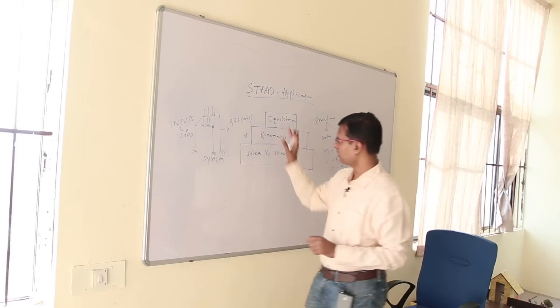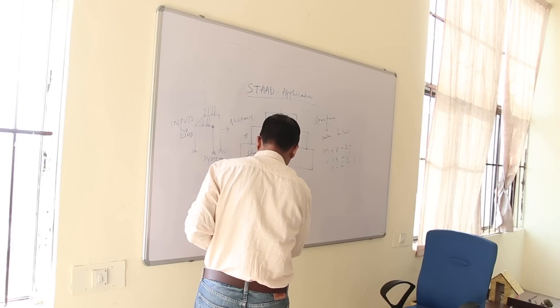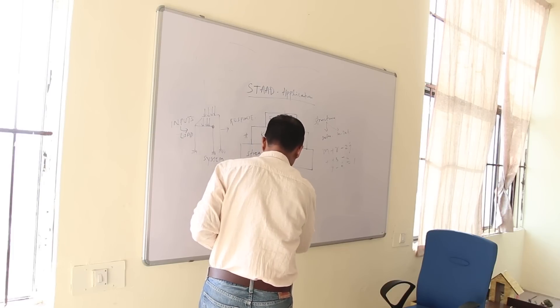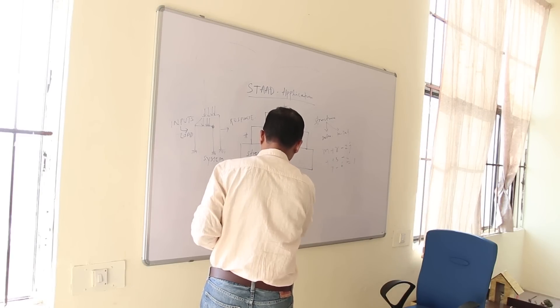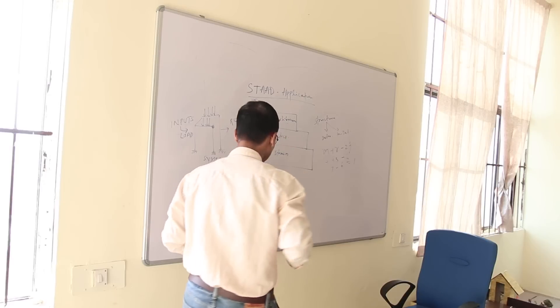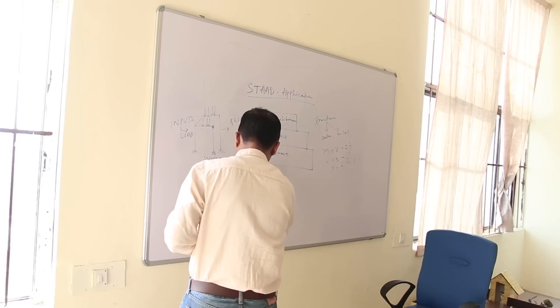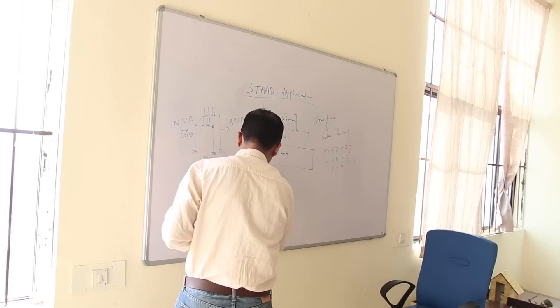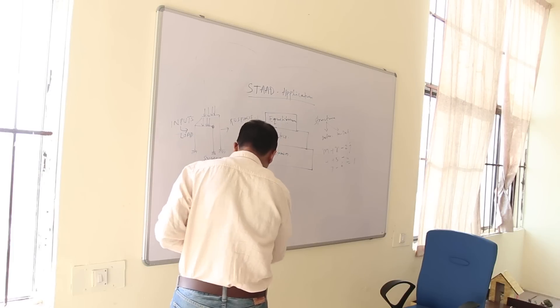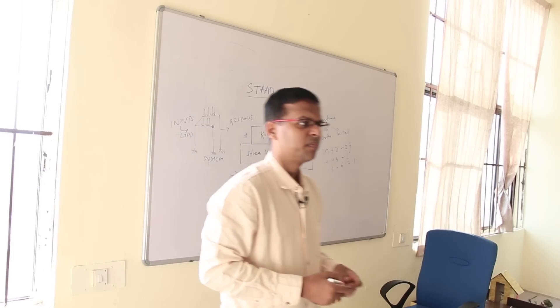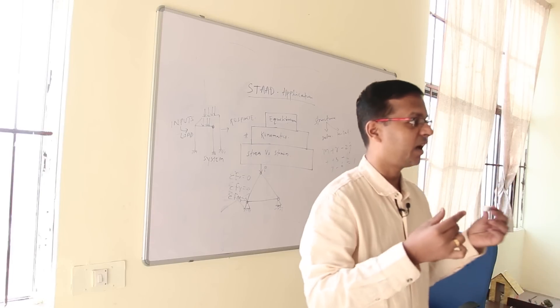There is a small structure before coming to this aspect. Let's say there is a truss, and this particular point is hinge joint and this particular point is roller supported, and here it is subjected to certain load P. If you see the equation of equilibrium ΣFx equal to 0, ΣFy equal to 0 and ΣM moment is 0 is not valid because this is truss. Truss is something which is subjected to axial load only.